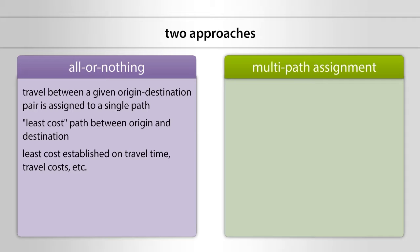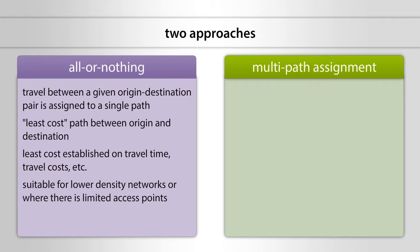The all-or-nothing approach is suitable for smaller, lower density networks or where there is limited choice of access points. It is also suitable when there is limited choice of paths in the network for the specific origin-destination pair.